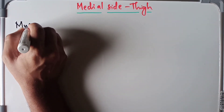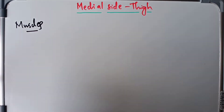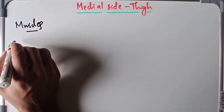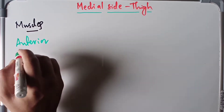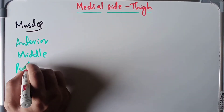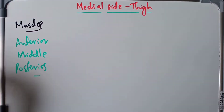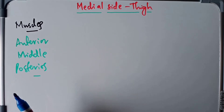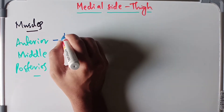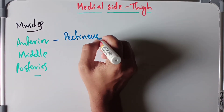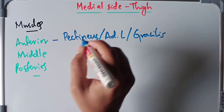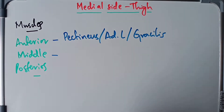The muscles of the medial compartment of the thigh form the adductor group and are arranged into three layers. The anterior layer consists of the pectineus, adductor longus, and gracilis.